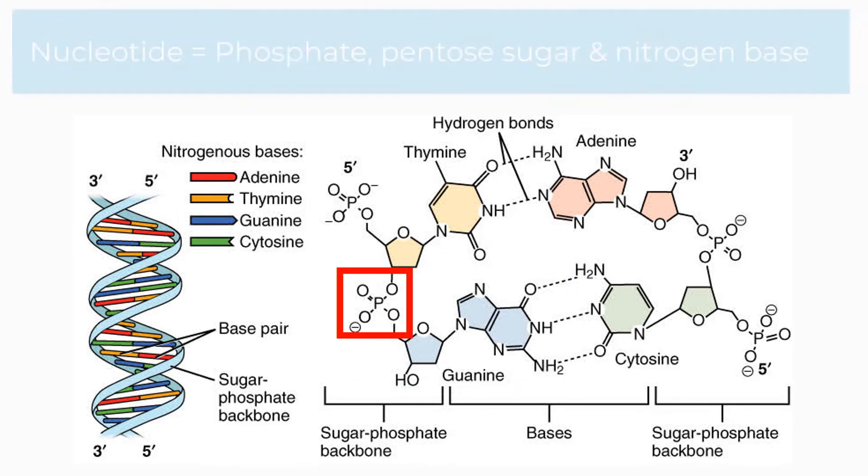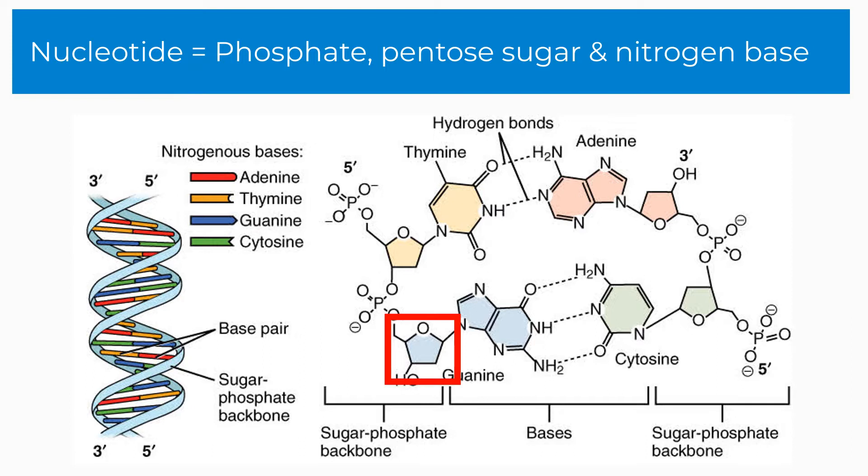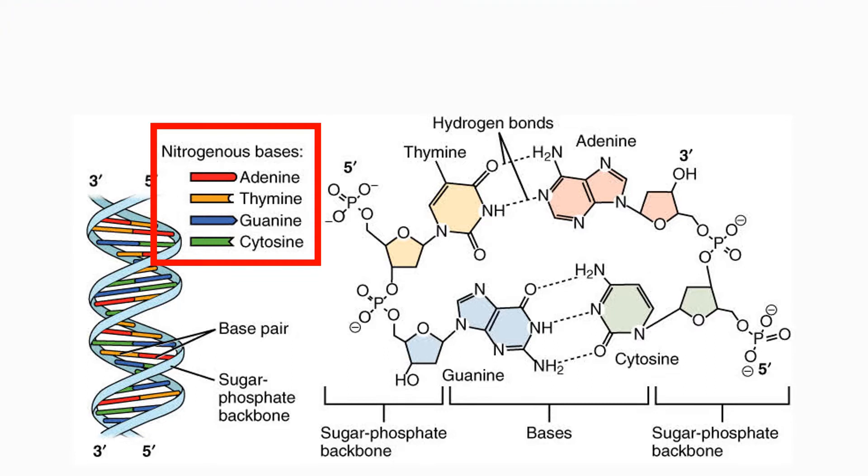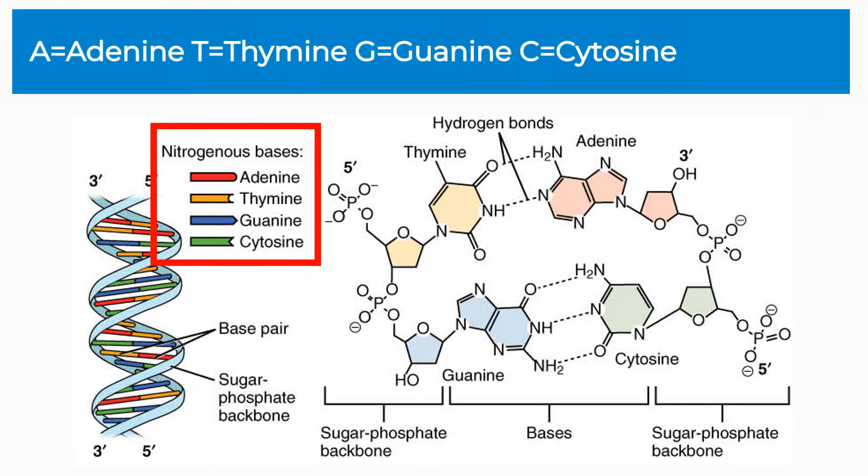A single nucleotide consists of a phosphate group, a pentose sugar called deoxyribose, and a nitrogenous base. There are four different nitrogen bases found in DNA: A for adenine, T for thymine, G for guanine, and C for cytosine.